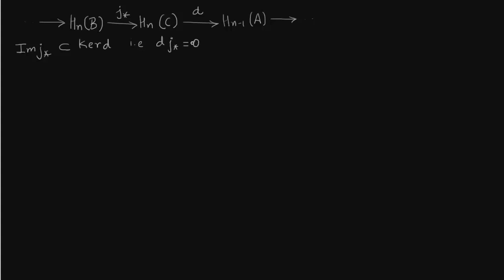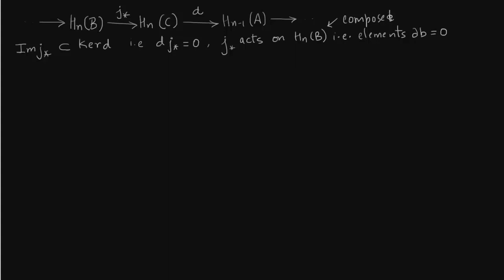We basically have to prove that d∘j* is zero. Notice that j* is a map which acts on H_n(B) and lands in H_n(C). Elements of H_n(B) are nothing but kernel of δ over image of δ, therefore δb is zero for any b which is an element of H_n(B). The map d is going to lift δb to a corresponding element in A.